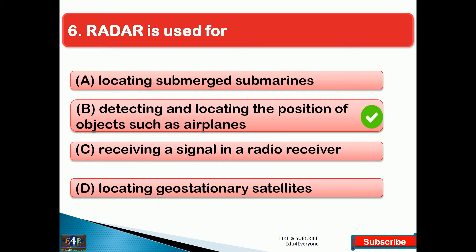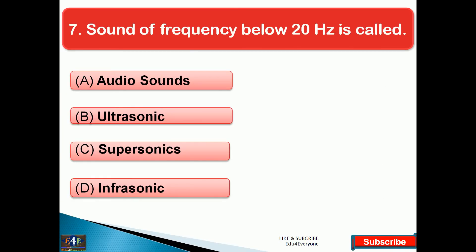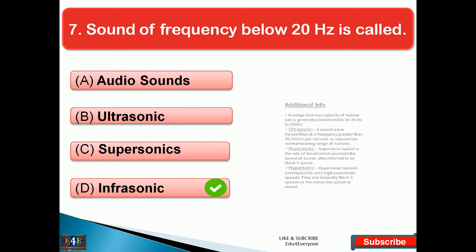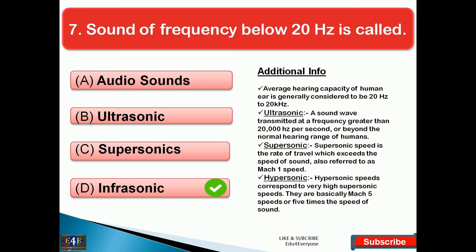Next question: sound of frequency below 20 hertz is called — the right answer is option D, that is infrasonic. The average hearing capacity of the human ear is generally considered to be 20 hertz to 20,000 hertz. Ultrasonic is a sound wave transmitted at a frequency greater than 20,000 hertz per second, beyond the normal hearing range of humans.